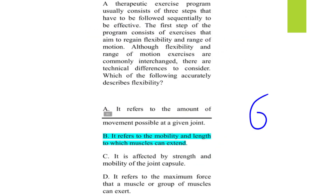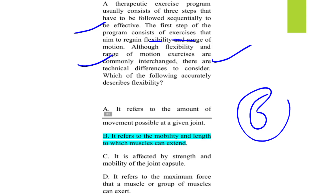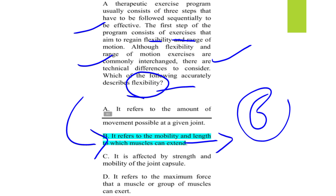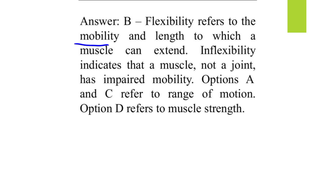MCQ number six: a therapeutic exercise program consists of three sequential steps; the first is exercises to regain flexibility and range of motion. The question asks which option accurately describes flexibility. Flexibility refers to the mobility and length to which a muscle can extend. Inflexibility indicates that a muscle, not a joint, has impaired mobility. Options A and C refer to range of motion.